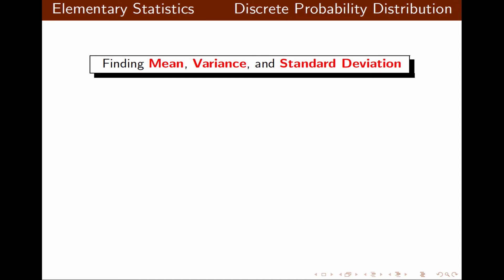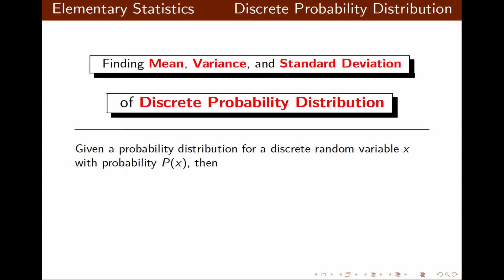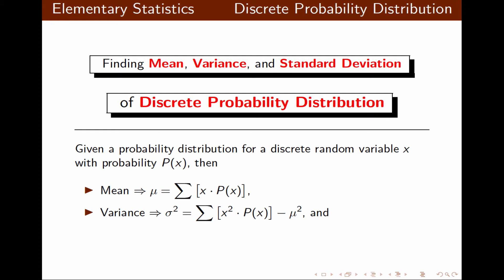How do we find the mean, variance, and standard deviation of a discrete probability distribution? Given a probability distribution for discrete random variable X with probability P of X, the mean mu is the summation of X times P of X. The variance sigma squared is the summation of X squared times P of X, minus mu squared. And the standard deviation sigma is always the square root of the variance sigma squared.